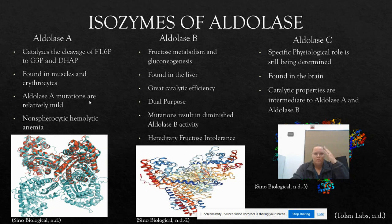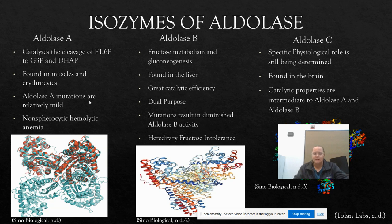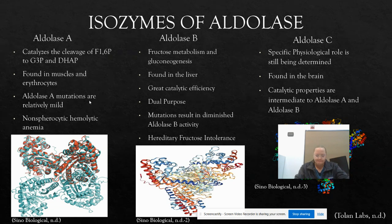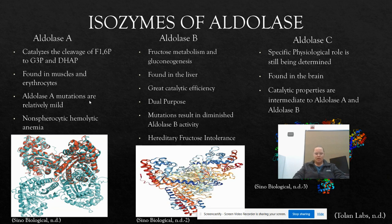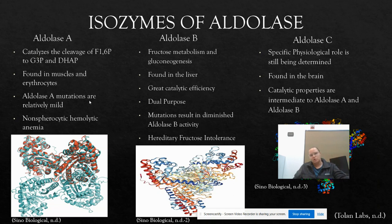Aldolase B is present in the liver and possesses a crucial role in fructose metabolism and gluconeogenesis. It has the greatest catalytic efficiency of all the aldolases — A, B, and C — for both fructose-1-phosphate cleavage and fructose-1,6-bisphosphate synthesis. It is well-suited for its dual purpose of breaking apart and synthesizing molecules in both glycolysis and gluconeogenesis. However, mutations in the human aldolase B gene result in diminished aldolase B activity — it is the cause of hereditary fructose intolerance, an autosomal recessive disease that leads to excess levels of fructose-1-phosphate in tissues, which can result in liver and kidney damage.